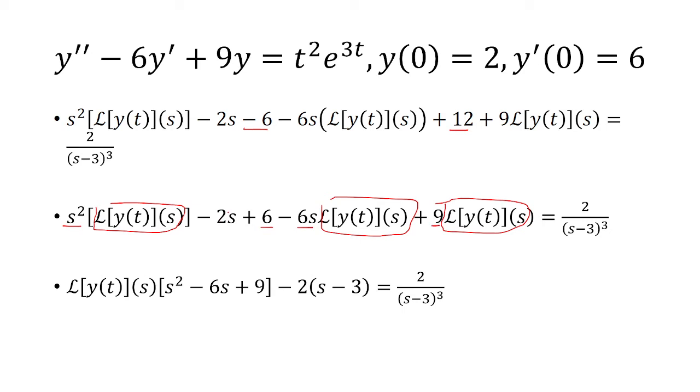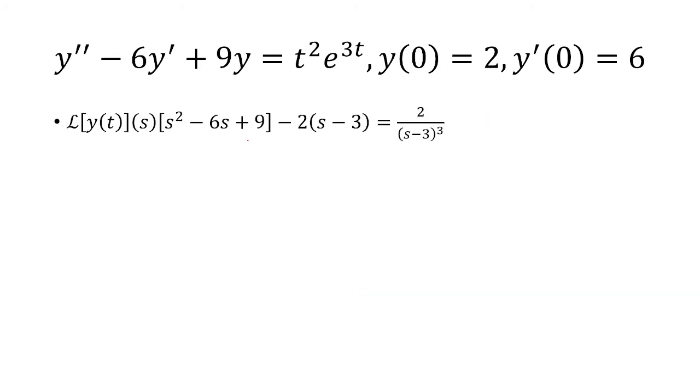And then I can factor out a negative 2 from negative 2s plus 6 to get negative 2 times s minus 3. Now I can factor out s squared minus 6s plus 9 as just s minus 3 quantity squared.